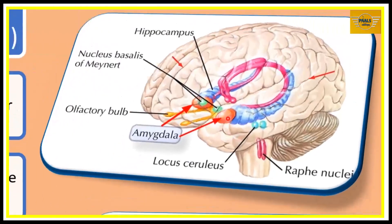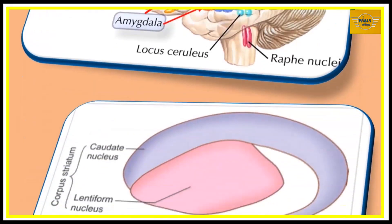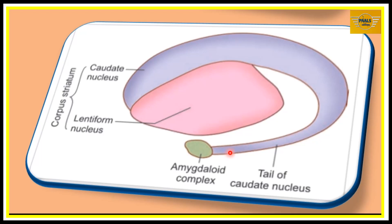Looking at the next diagram, here is the amygdala and here is our temporal lobe. It is located below the rostral part of the parahippocampal gyrus, and posteriorly it continues as one of the other nuclei seen in the basal ganglia — the caudate nucleus. It also continues posteriorly as its major efferent, which is the stria terminalis. Here is the amygdala, and continued posteriorly is the tail of the caudate nucleus, running as its major efferent, the stria terminalis.